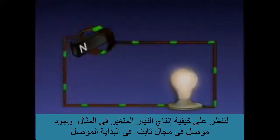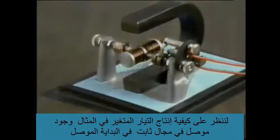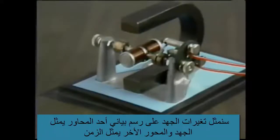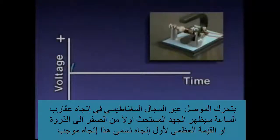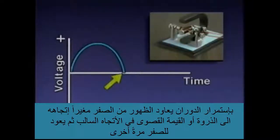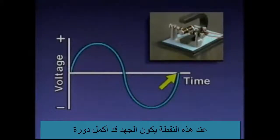As the conductor rotates through the magnetic field in a clockwise direction, the induced voltage first builds up from zero to a peak or maximum value in one direction — the positive direction. As the conductor continues to rotate, the voltage returns to zero, then changes direction, builds up to a peak in the negative direction, and returns to zero again. At this point, the voltage has completed a full cycle. This curve is called a sine wave.